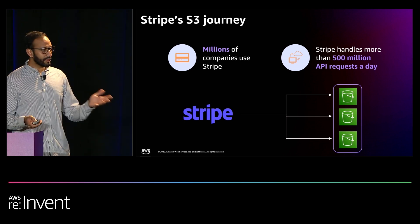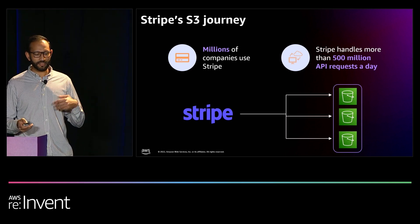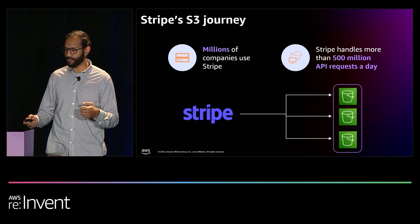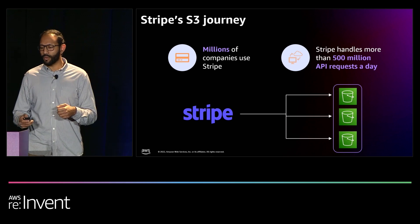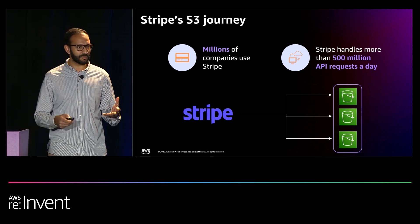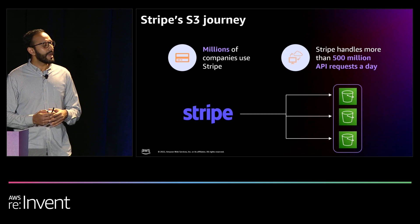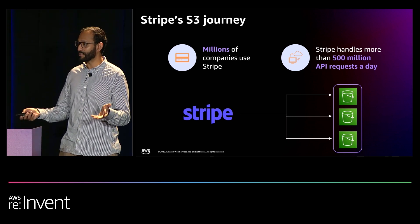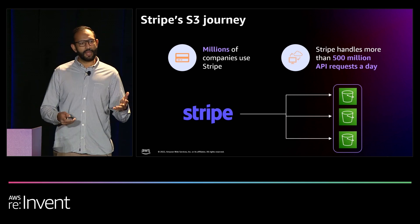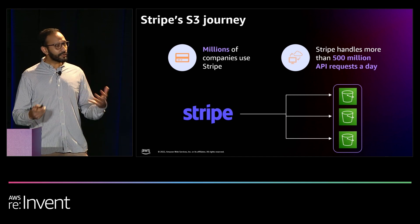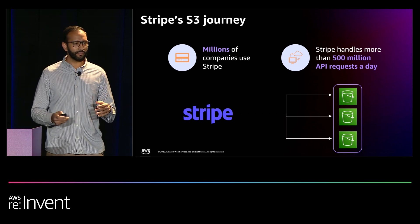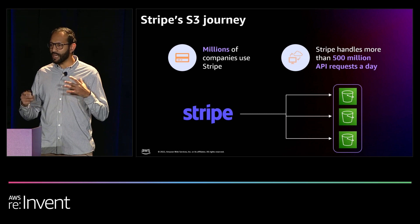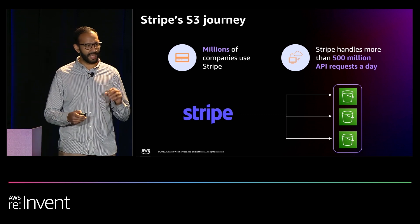Millions of companies, from the world's largest enterprises to the most ambitious startups, use Stripe to accept payments, grow their revenue, and accelerate new business opportunities. At Stripe, we have just a few S3 buckets but thousands of prefixes within those buckets. We process half a billion API requests a day, sometimes over 10,000 API requests a second. All of that data results in hundreds of petabytes of data in S3, concentrated in just a handful of buckets.